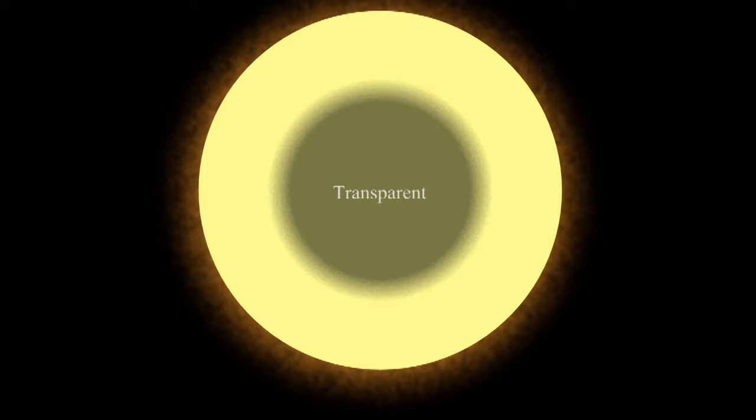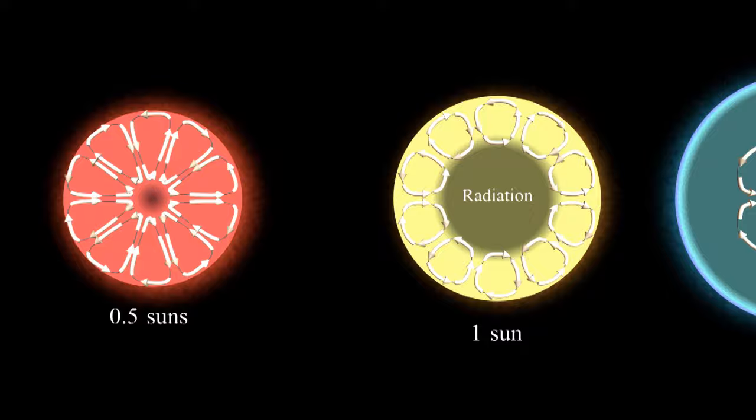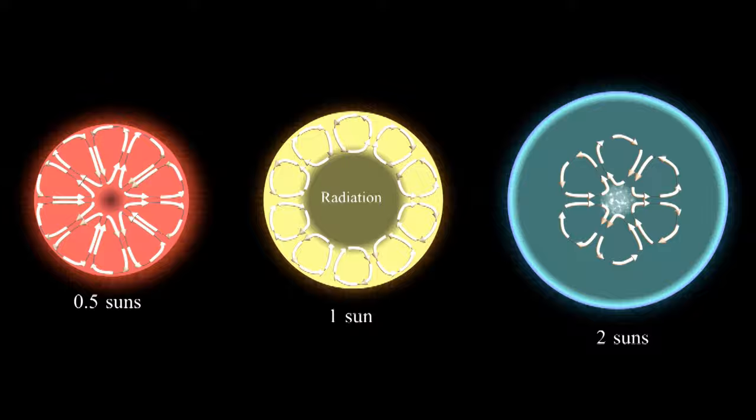Small stars are cold. Cold stars are more opaque and have larger convection zones. The convection zone will fill up the whole star if it's below half a solar mass. Massive stars do CNO fusion, which means they're the opposite of the sun. They have convection in the middle and radiation on the outside.